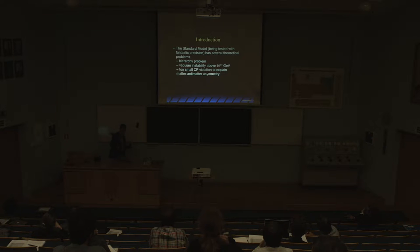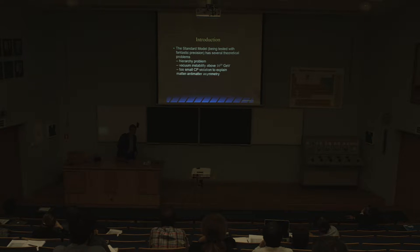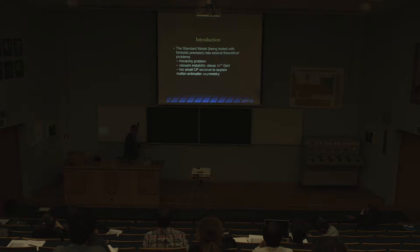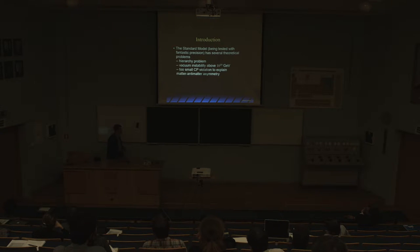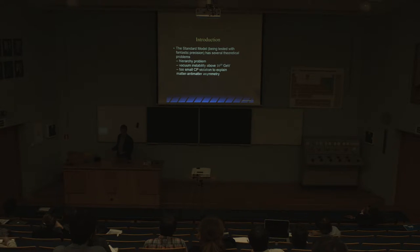The standard model itself has vacuum instability above 10^10 GeV, so it cannot be the ultimate model. There are also too-small CP violations in the Kobayashi-Maskawa matrix to explain leptogenesis and matter-antimatter asymmetry. There is also no candidate for dark matter in the standard model.